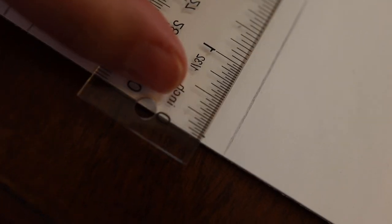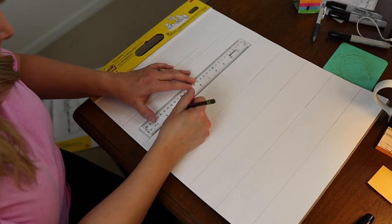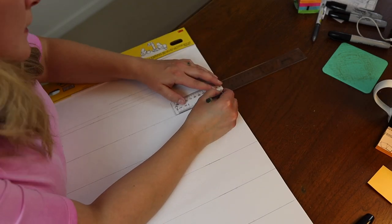So starting at one-sixteenth inside the edge of the paper, we're going to go two and an eighth over.